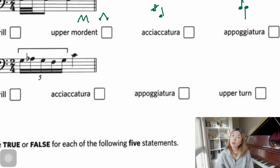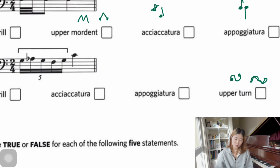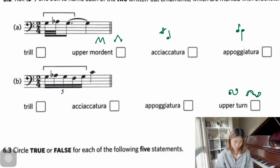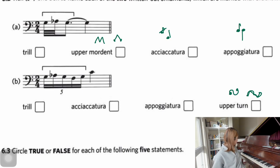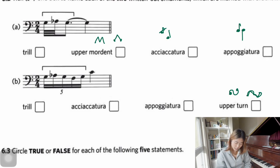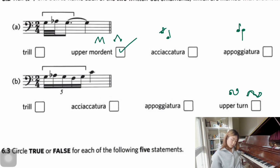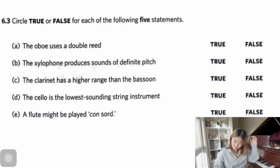An upper turn looks like its symbol shape: principal note goes up, back to principal, then down and back — mostly four or five notes total. An upper mordent: principal note goes up and back — three notes. The turn: principal note goes up, down, and back. These ornaments are important to distinguish visually and aurally.